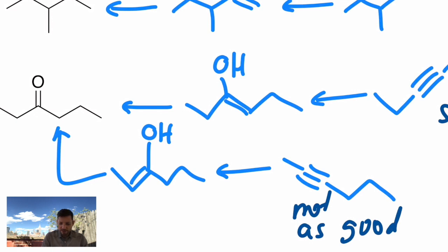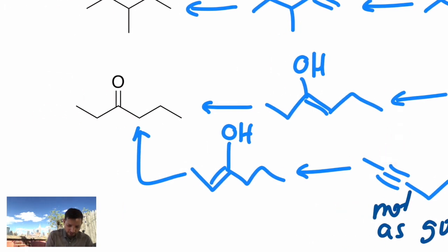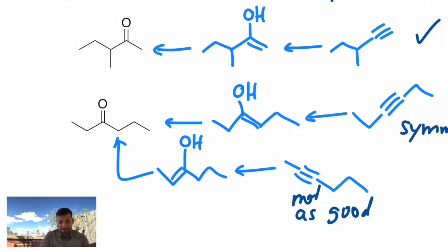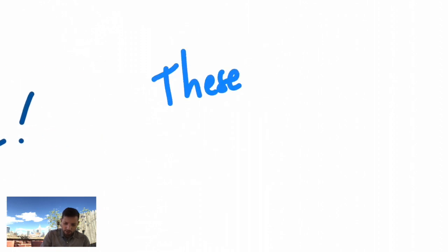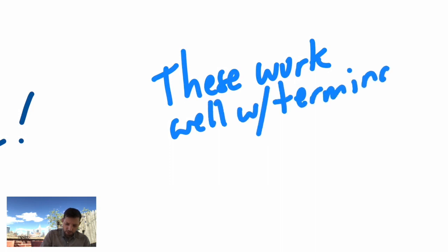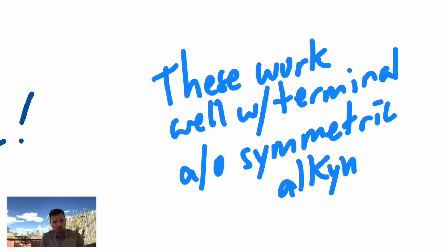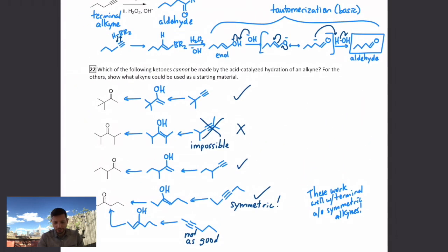And the one below it that's not symmetric, not as good, would not be as effective because you could imagine attacking this at the carbon where we want it to go to make this product over here. But alternatively, you could imagine attacking the other carbon that's closer to the end. And then you would get a completely different ketone on a different position to get a constitutional isomer. So this reaction works really well for terminal alkynes and also symmetric alkynes. In fact, let's make a note of that. These work well with terminal and/or symmetric alkynes. And that example is meant to show you why. Okay, so that's how you take an alkyne and turn it into a ketone or an aldehyde.